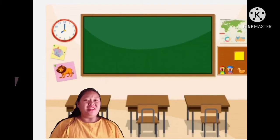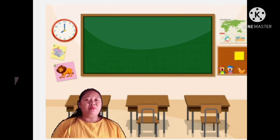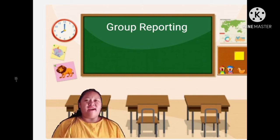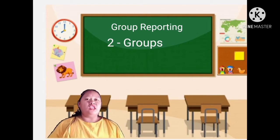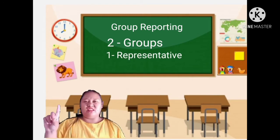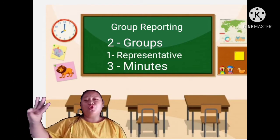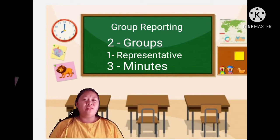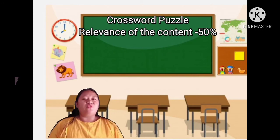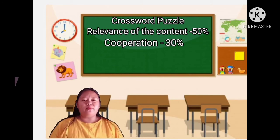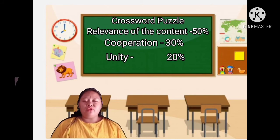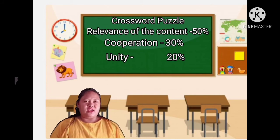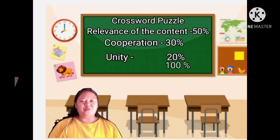Class, you have finished your activity and now, we will be doing a group reporting. I will group you into two groups. Each group will have one representative and I will give you three minutes to do your reporting. But, before we proceed to that activity, I will give you a criteria. Relevance of the content is 50%. Cooperation of the group 30%. Unity of the group 20%. Equals 100%.